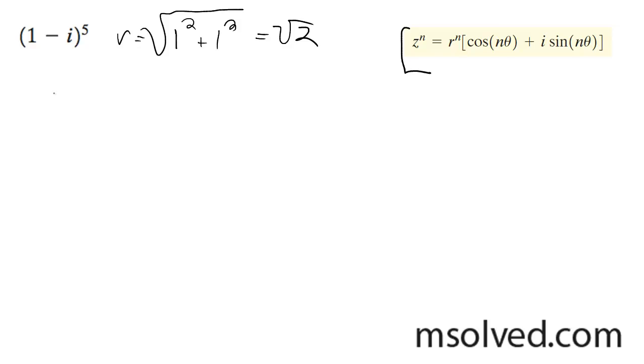And so 1 minus i is located in quadrant 4. This is 315 degrees.